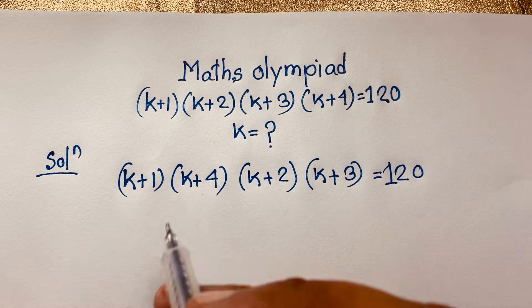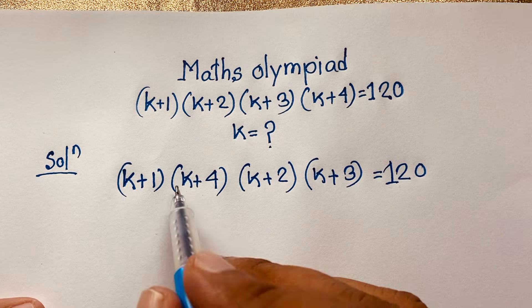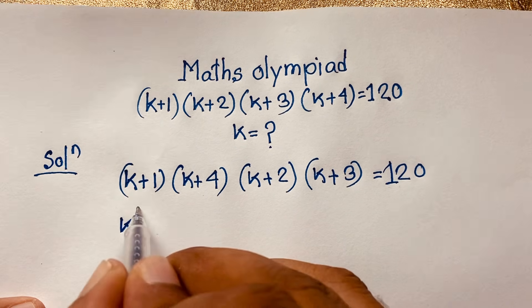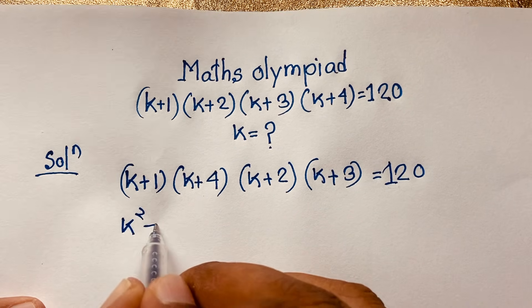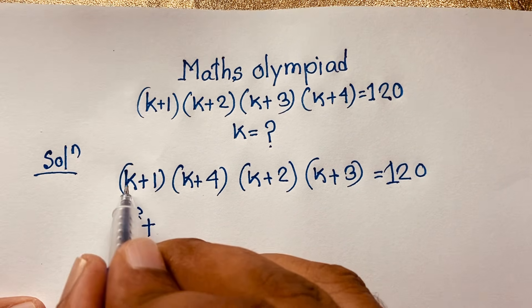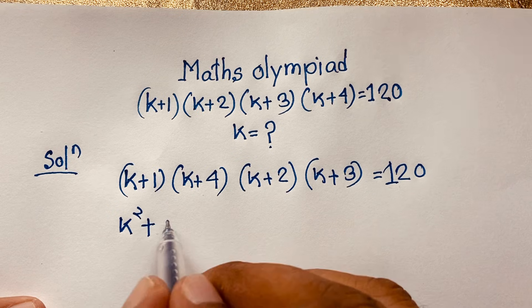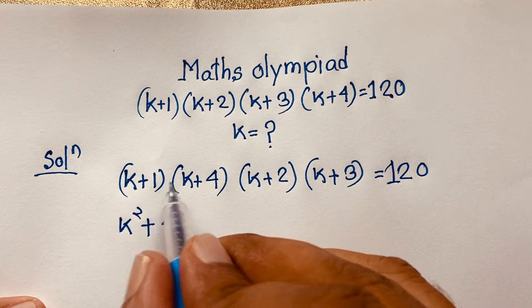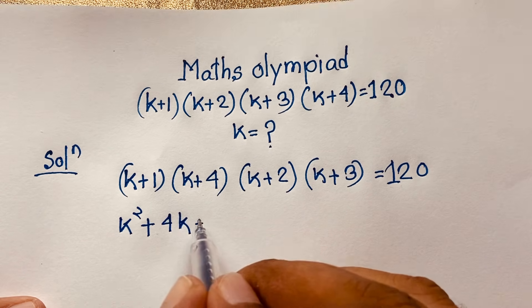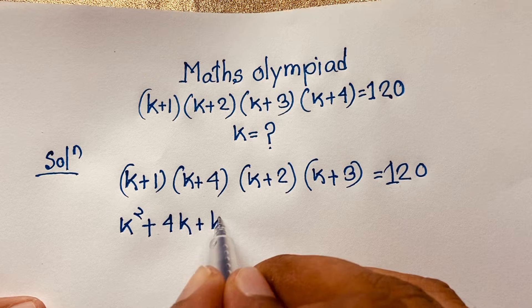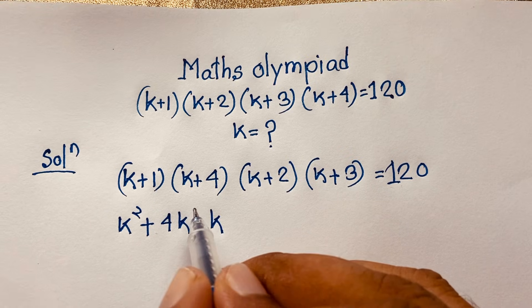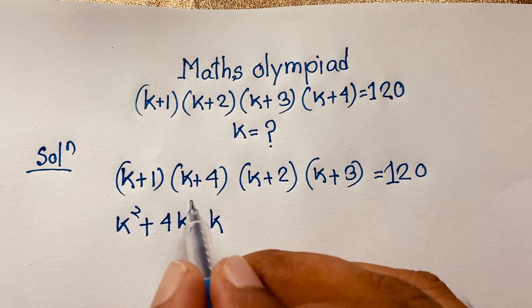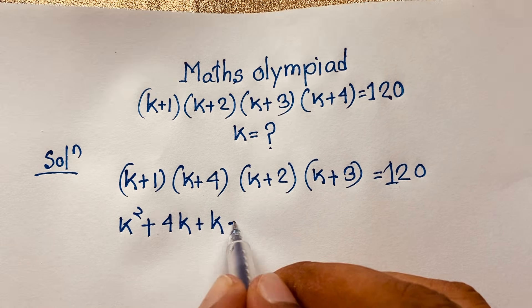Now I expand (k+1)(k+4): k times k is k², k times 4 is 4k, 1 times k is k, and 1 times 4 is 4. So (k+1)(k+4) = k² + 5k + 4.